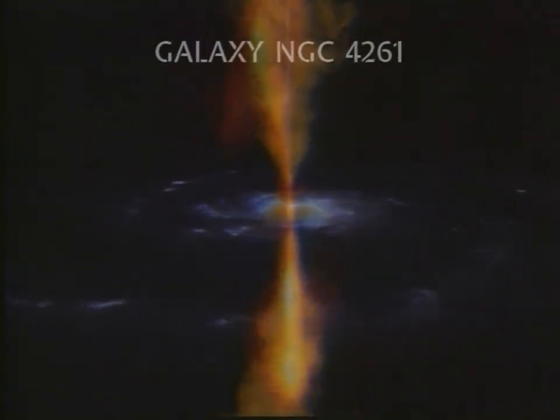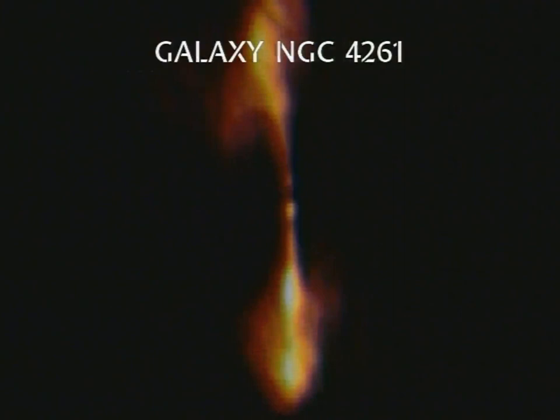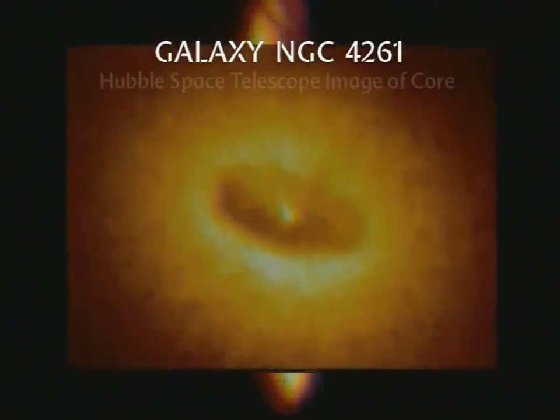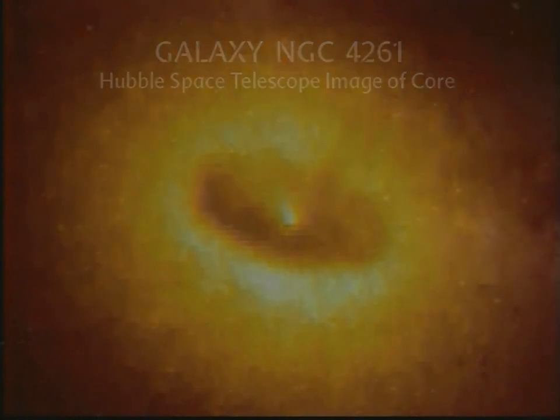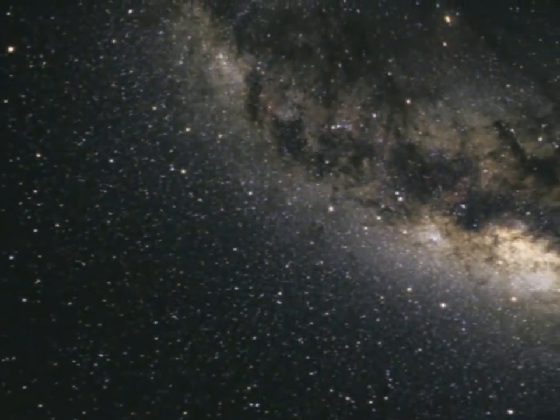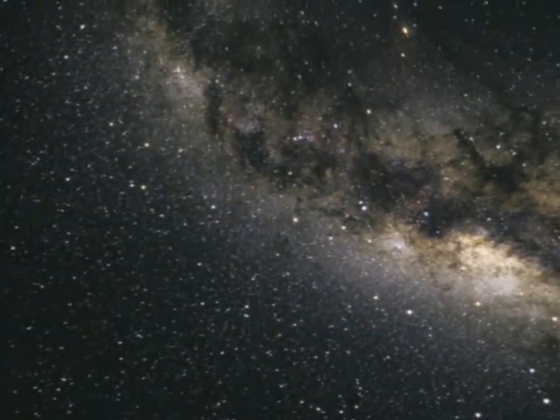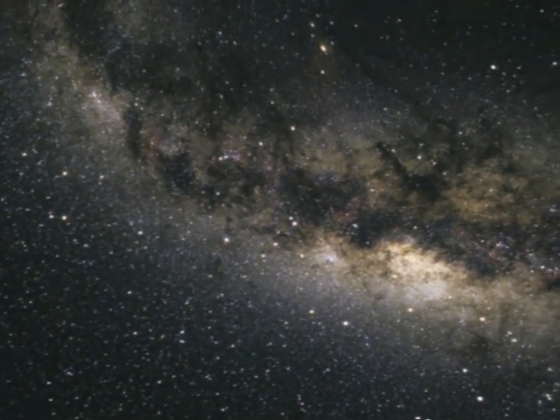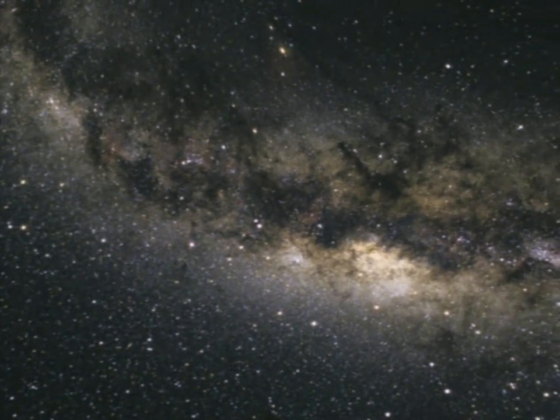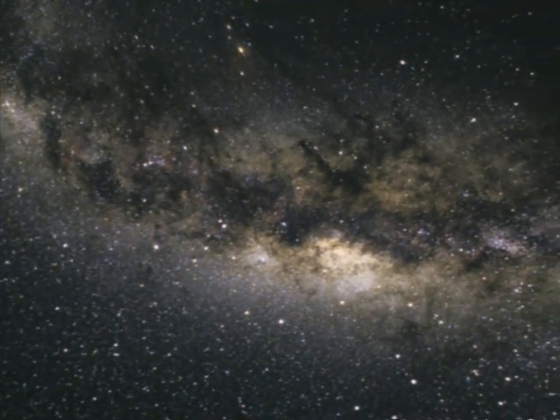These images are thought by astronomers to be an accretion disk around a gigantic black hole in the center of a distant galaxy. Closer to home, millions of stellar black holes may be among the few hundred billion stars in our own Milky Way galaxy. The nearest black hole may be only 30 light years from Earth.